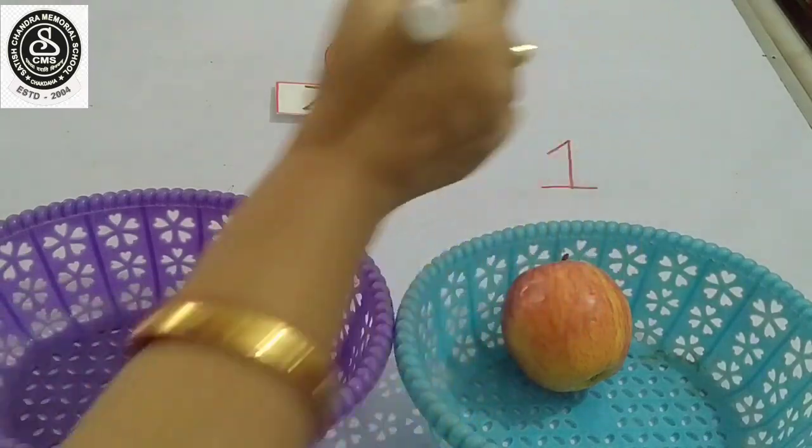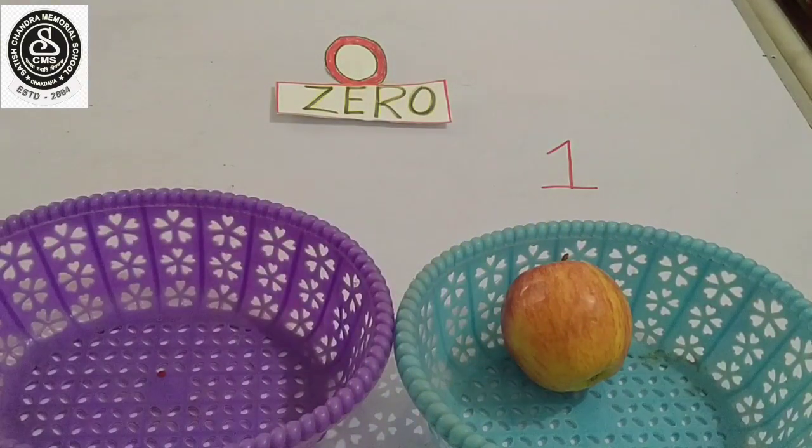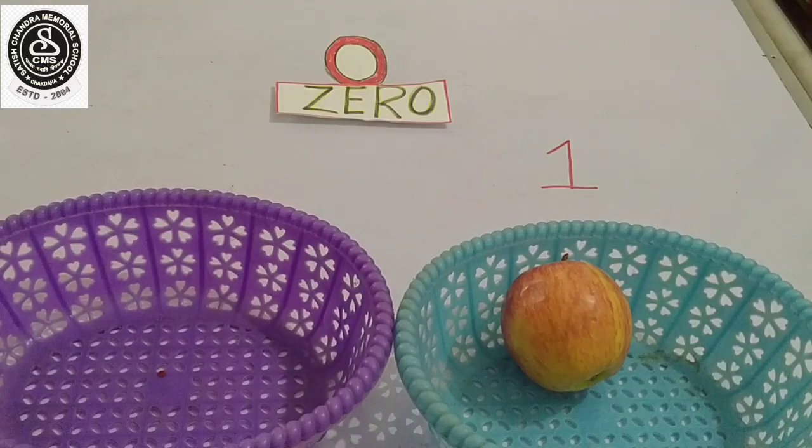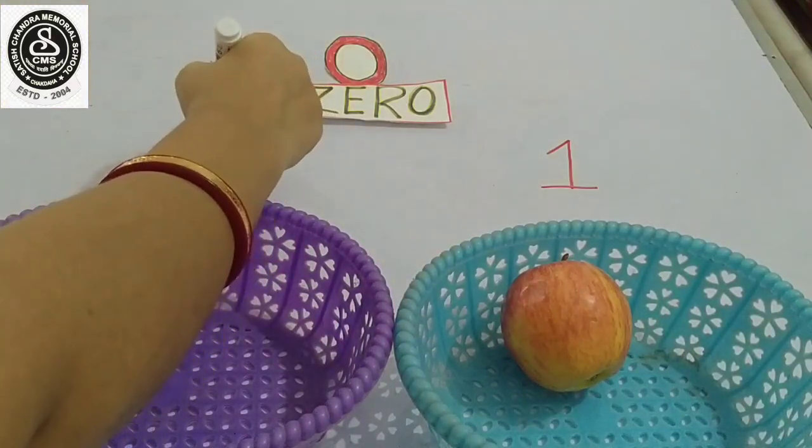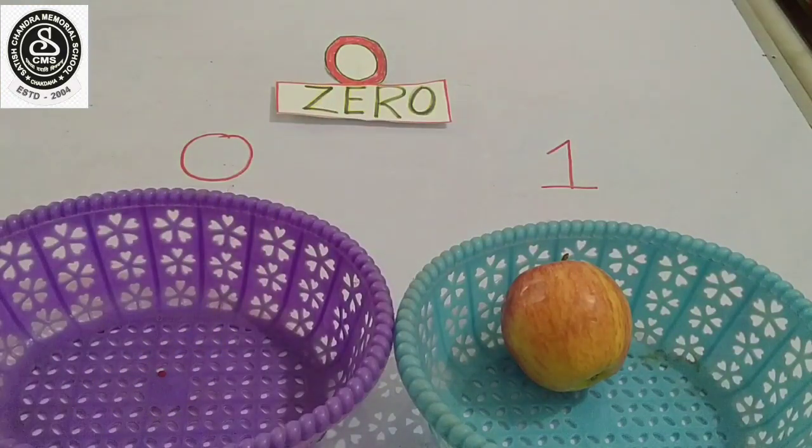And then see this basket. Is there anything? Nothing is there. So what should I write? Yes, nothing is there. So nothing means I have to write here zero. Zero means nothing.